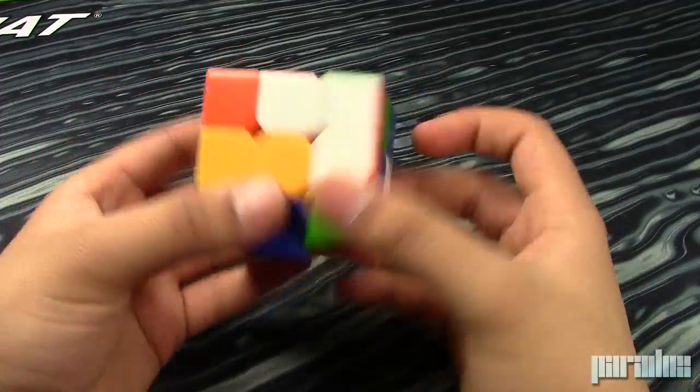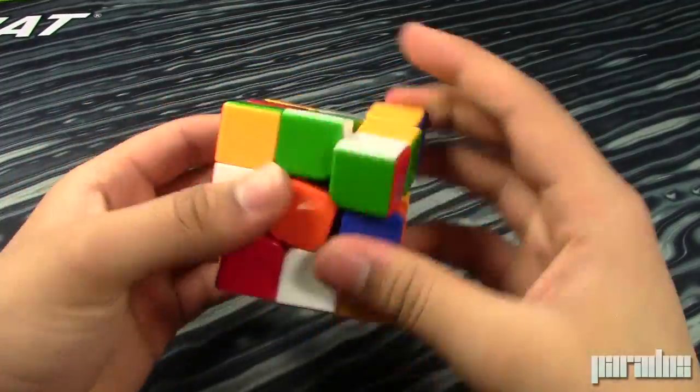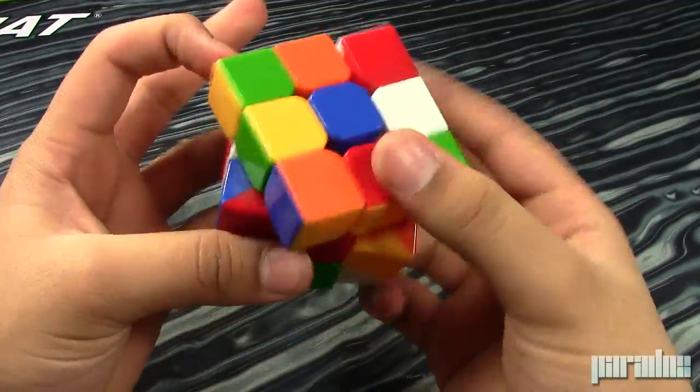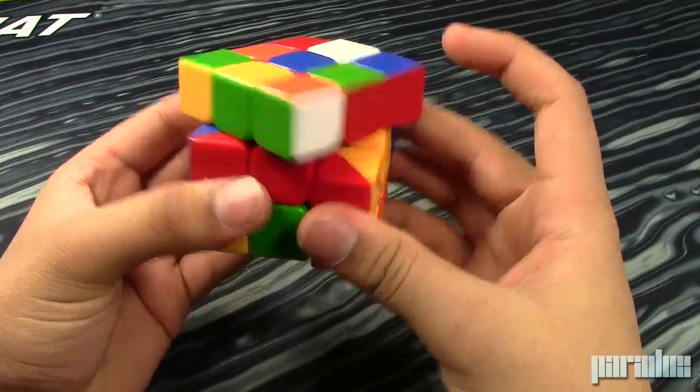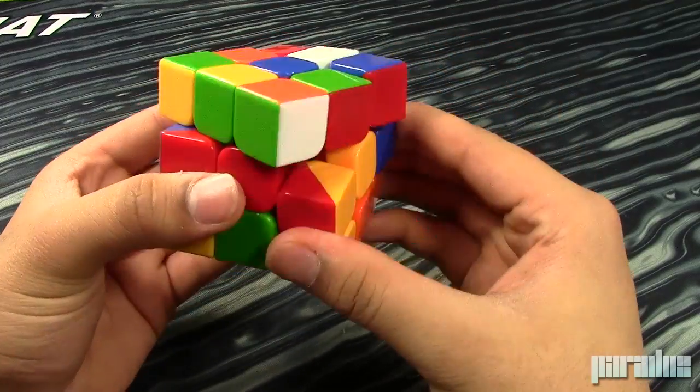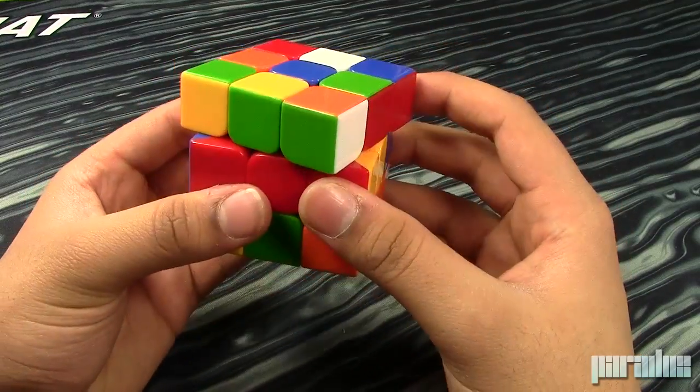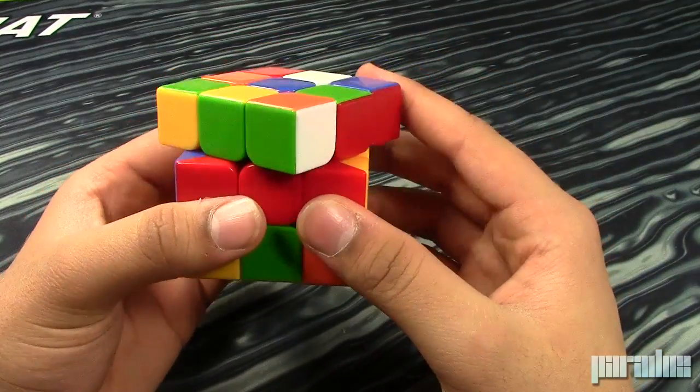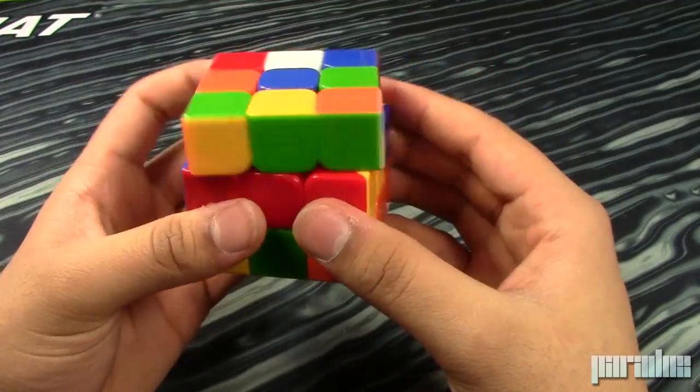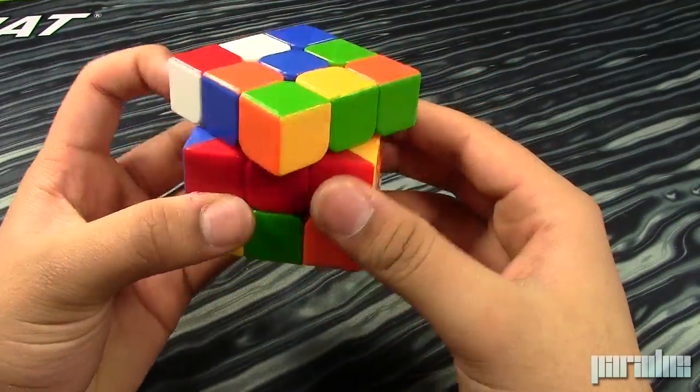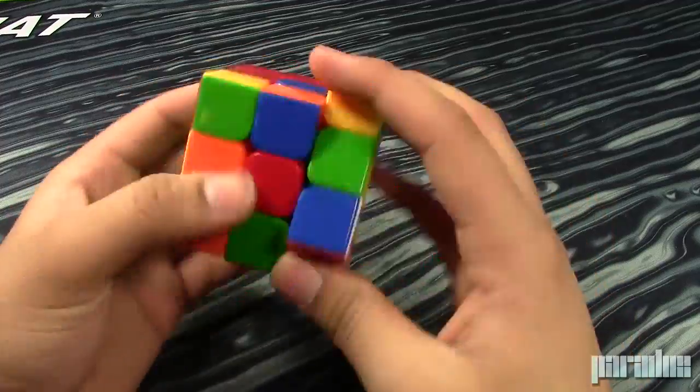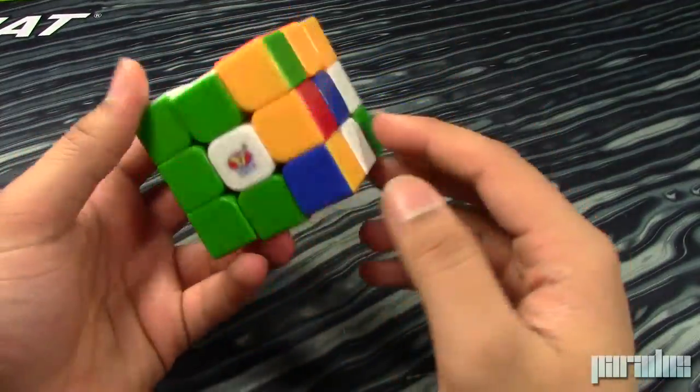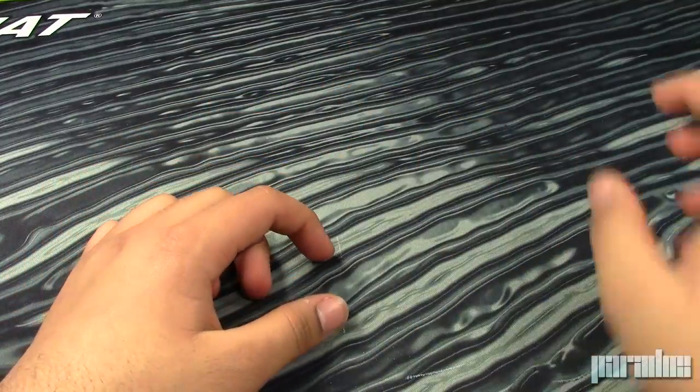It has decent turning. It kind of locks up at points. The corner cutting is really good. It just locks up there. It either corner cuts or it doesn't. There's no points where it kind of corner cuts. It just either really badly locks up or just cuts. And then it can cut 45. It's a really good cube. I would recommend this so far. But I have a feeling it can get better after some working it in and stuff. So yeah, there's that.